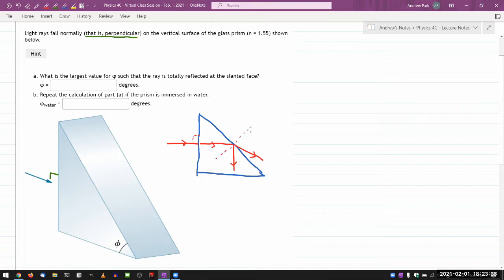So that's usually what will happen. But for this particular question, we are looking for a condition. What is the largest value for phi such that the ray is totally reflected at the slanted face? So we are looking for a very particular scenario where I have this angle phi and there is some critical angle at which there is nothing reflected through and everything is reflected.